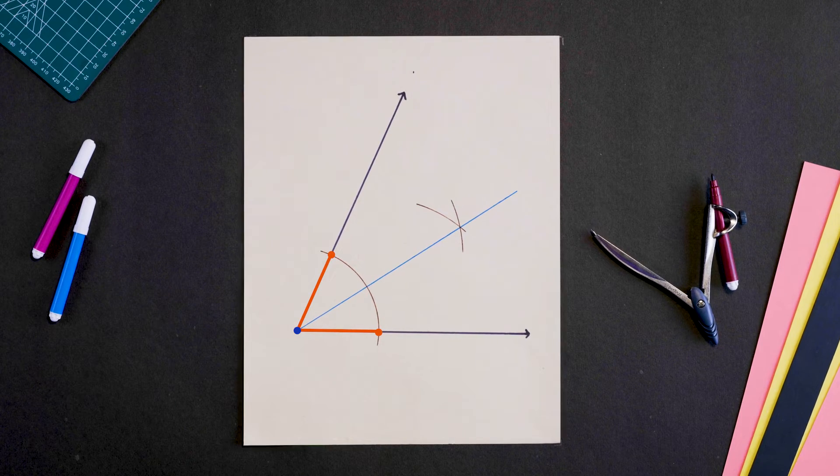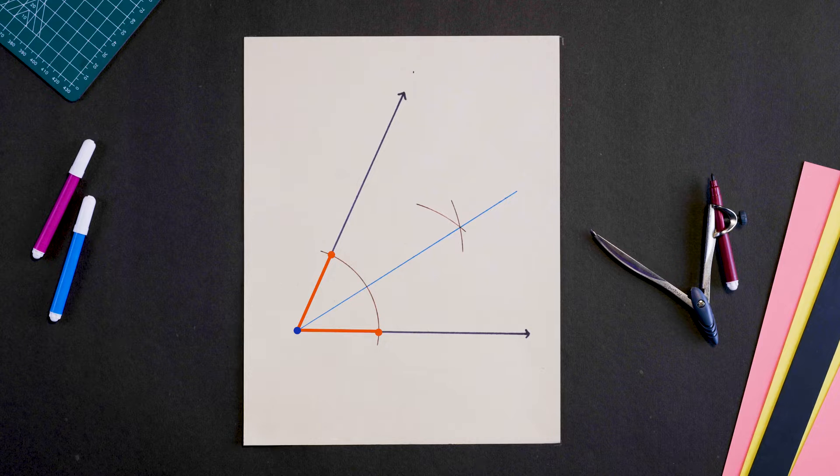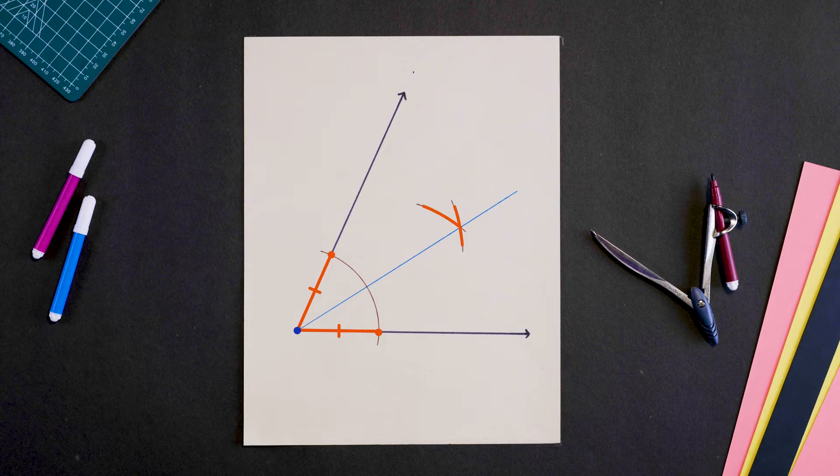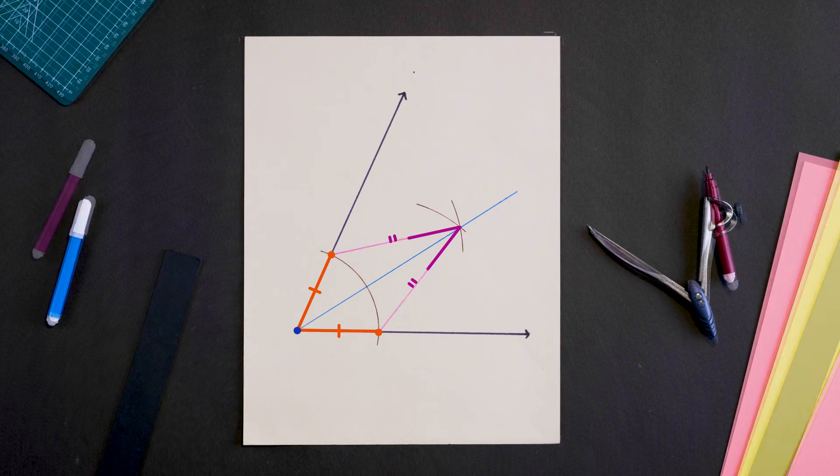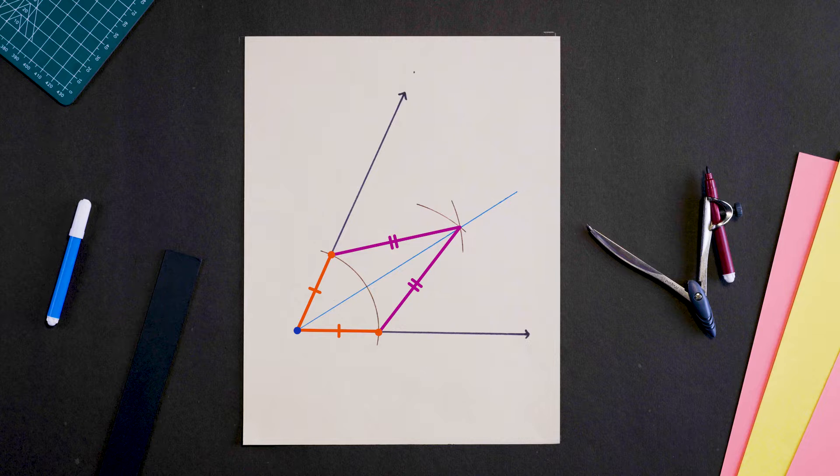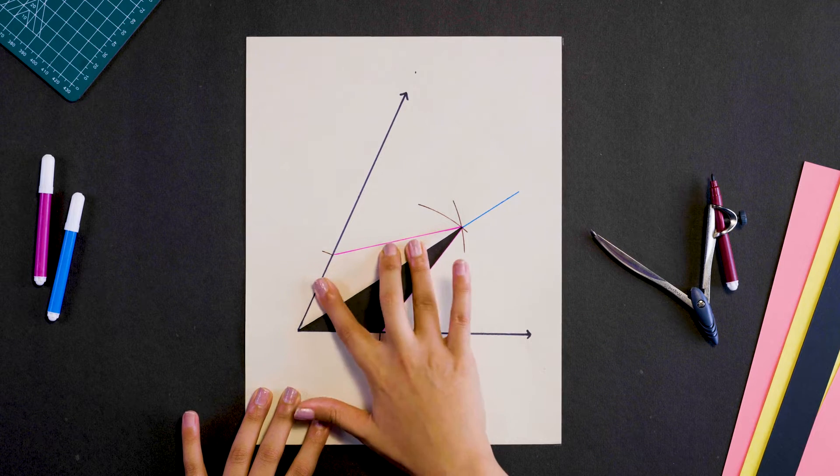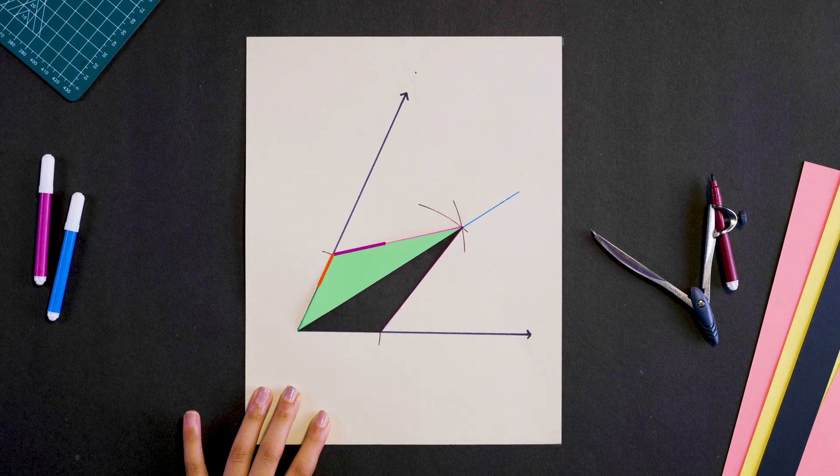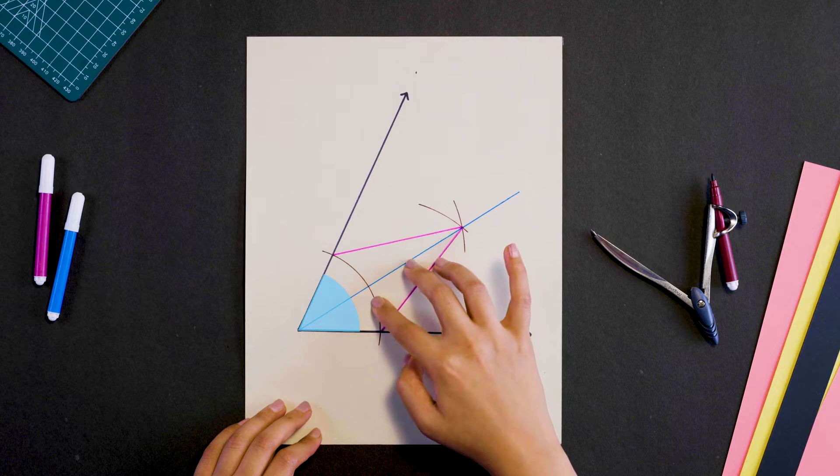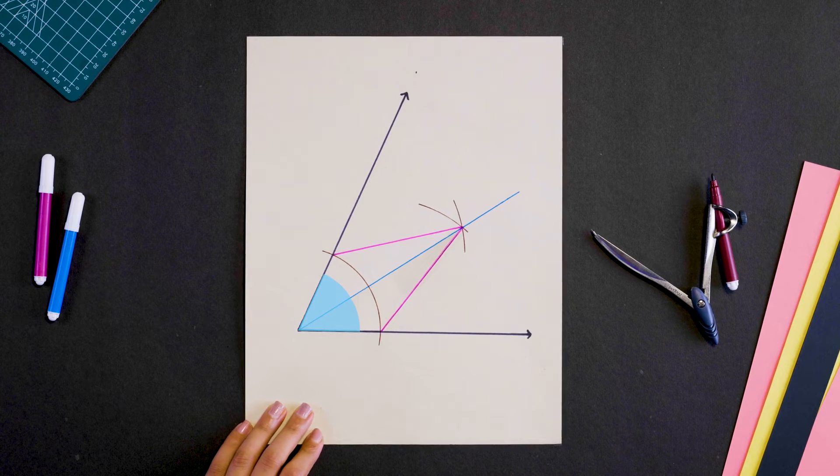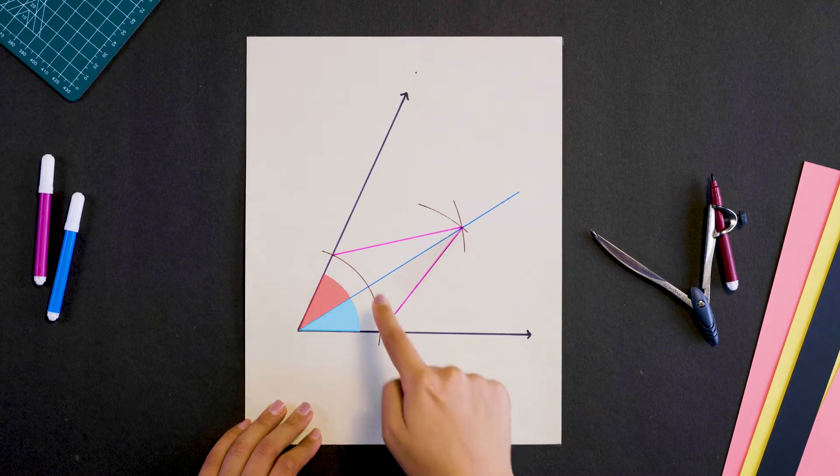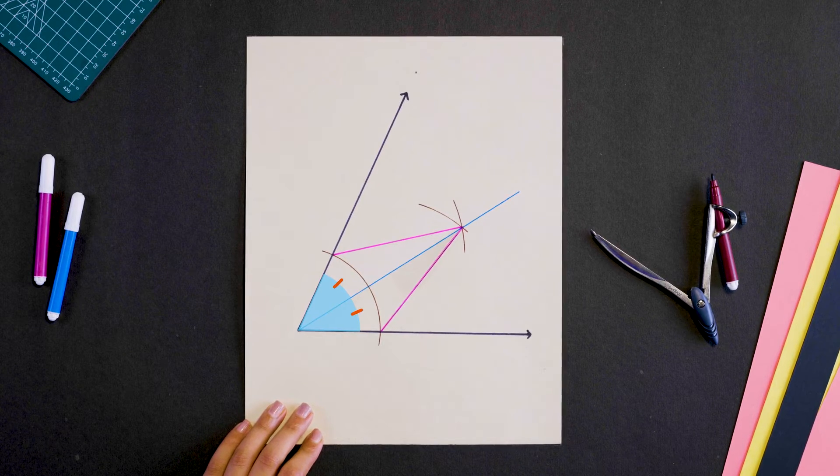Why? These two lengths are the radius of this arc, so they must be equal. And these two arcs have equal radii, so these two lengths must also be equal. Now if we fold this shape aligning these two equal sides, we get two perfectly overlapping triangles, which means these two angles must be equal.